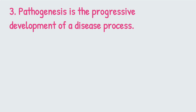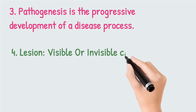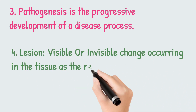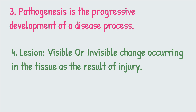Number three is pathogenesis. Pathogenesis is the progressive development of a disease process from the time the disease is initiated in the animal body to the end of the disease, either in recovery or death.